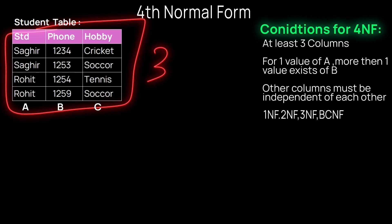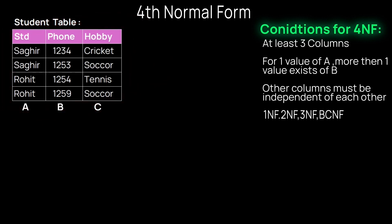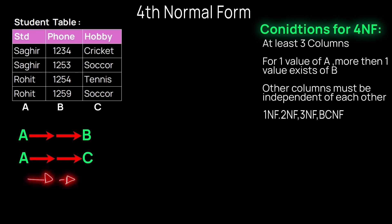The table satisfies the second condition because for one value of Sagir, the student, there exist multiple phone numbers and multiple hobbies. Similarly for Rohit there are multiple phone numbers and multiple hobbies. The third condition is that the other columns must be independent of each other — a hobby and phone number must not have anything to do with each other. A hobby cannot determine the phone number, and a phone number cannot determine the hobby, so they are independent. This condition is also satisfied.